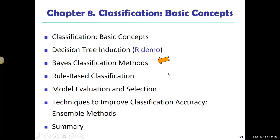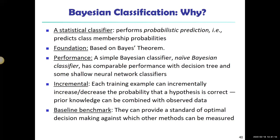Earlier we talked about decision trees. Next we're going to look at Bayes classification methods. Bayesian classification methods have a solid foundation on Bayes' theorem. Today we're going to first learn the naive Bayesian classifier, and next week we're going to look at Bayesian networks.